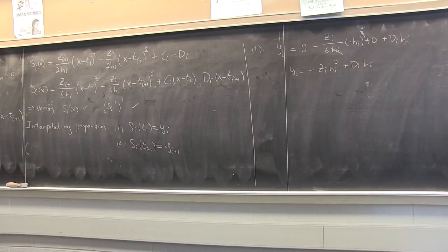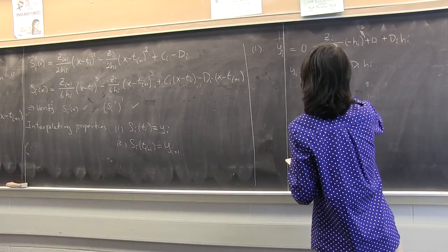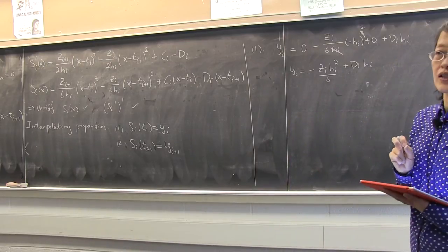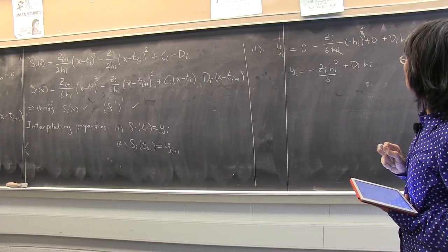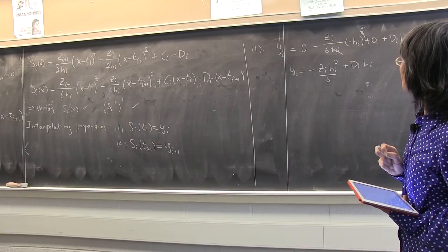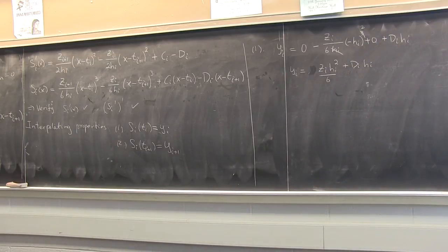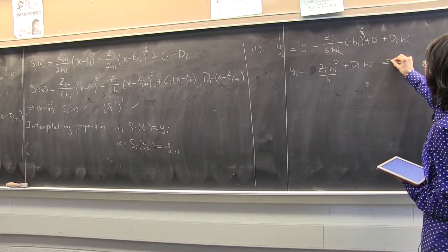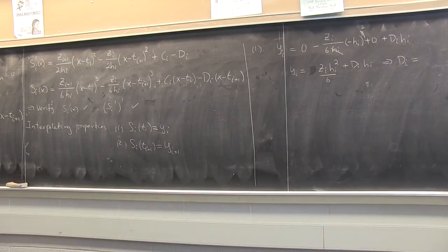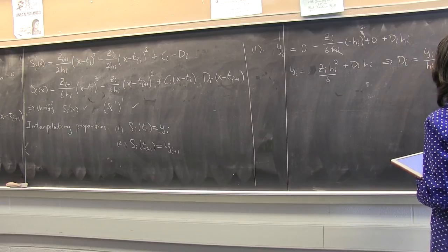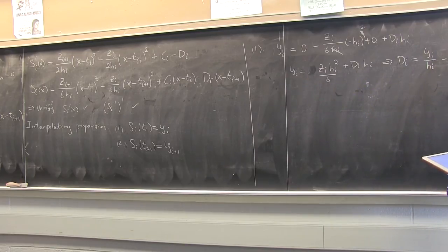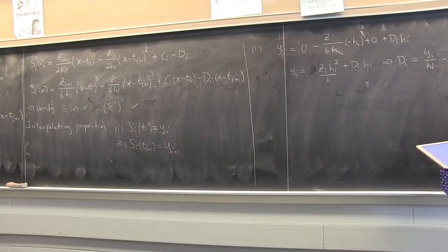So from yi = -zi hi²/6 + Di hi, I can solve for Di by dividing both sides by hi: Di = yi/hi minus zi hi/6. If the zi's are given, I can compute Di since yi and hi are data I already know.